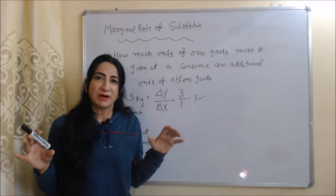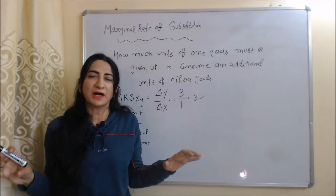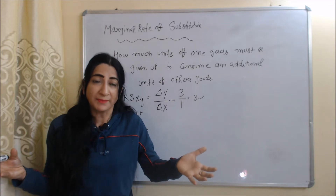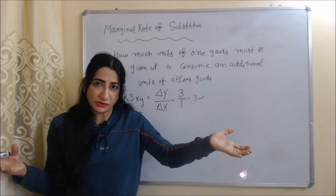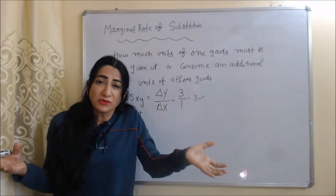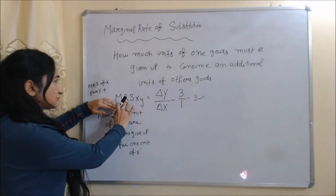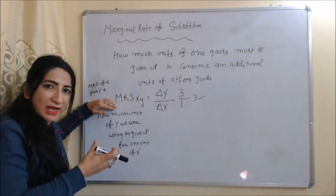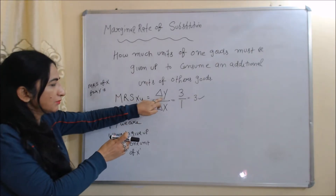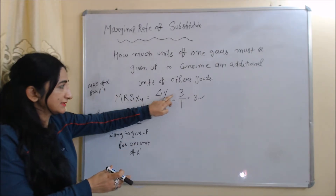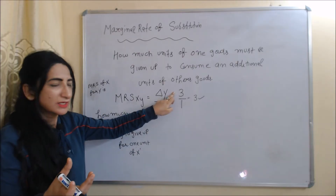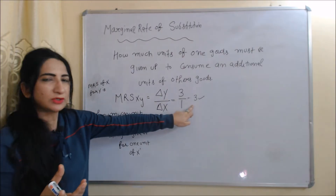Marginal rate of substitution is a very important part of indifference curve analysis. It tells us how much units of one good must be given up so that we can consume an additional unit of the other good. For marginal rate of substitution of X for Y, we calculate how much units of Y must be given up to consume an additional unit of X. The formula is change in Y divided by change in X. Here, change in Y is 3 and change in X is 1, so MRS of X for Y equals three.